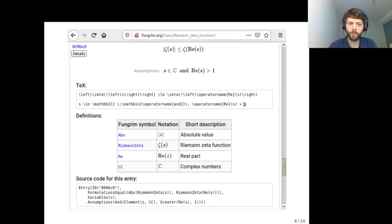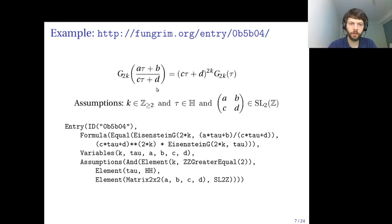Just another example of an entry, this is the modular transformation for Eisenstein series. In this case, there are several parameters appearing in the formula, and there are some more complex constraints. Tau has to be a complex number in the upper half plane, and a, b, c, d have to be integers such that this matrix belongs to SL2Z.